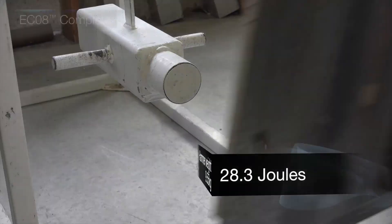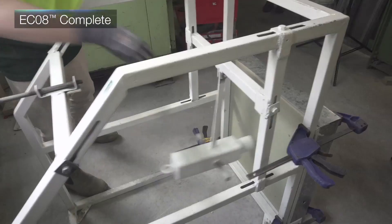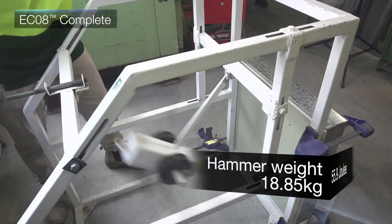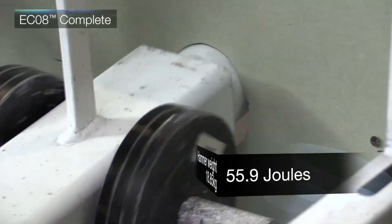The same impact energy had no effect on Chiprock EC08 Complete. In fact, it took a total hammer weight of almost double that to reach failure, at 55.9 joules.